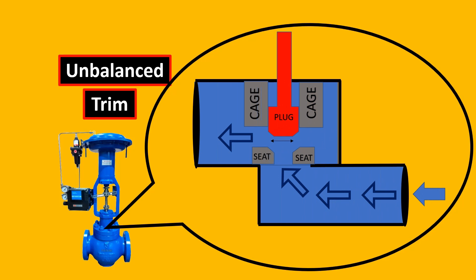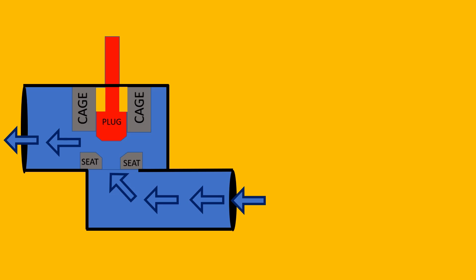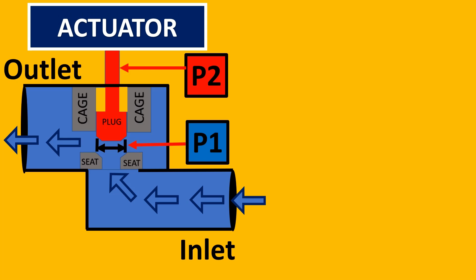Let's take this example of an unbalanced valve. Here's your cage, plug, and seat assembly. The flow is going from the inlet to the outlet, and here you have the force P1 which is acting from the fluid. On the other side, there is force P2 from the actuator.